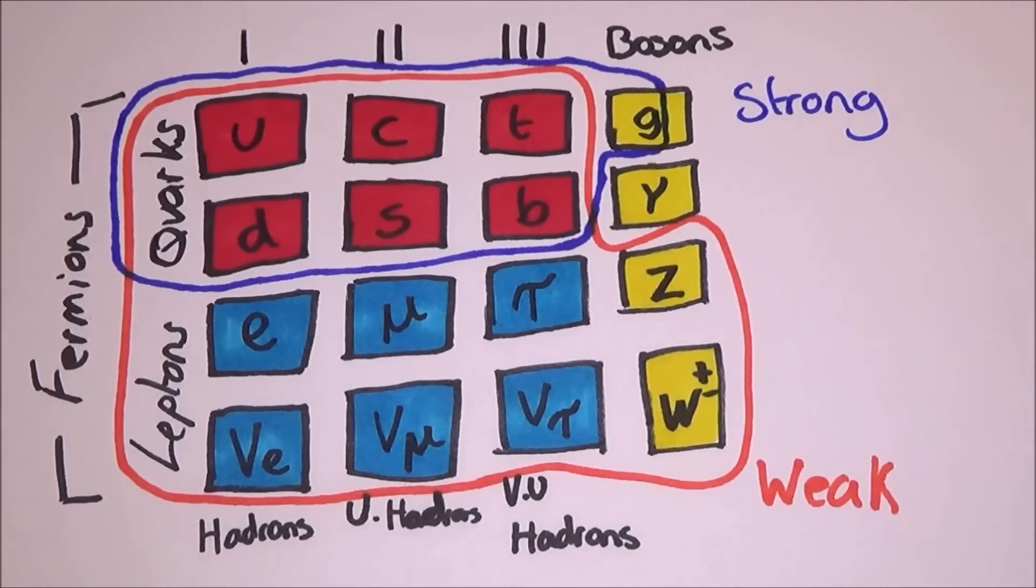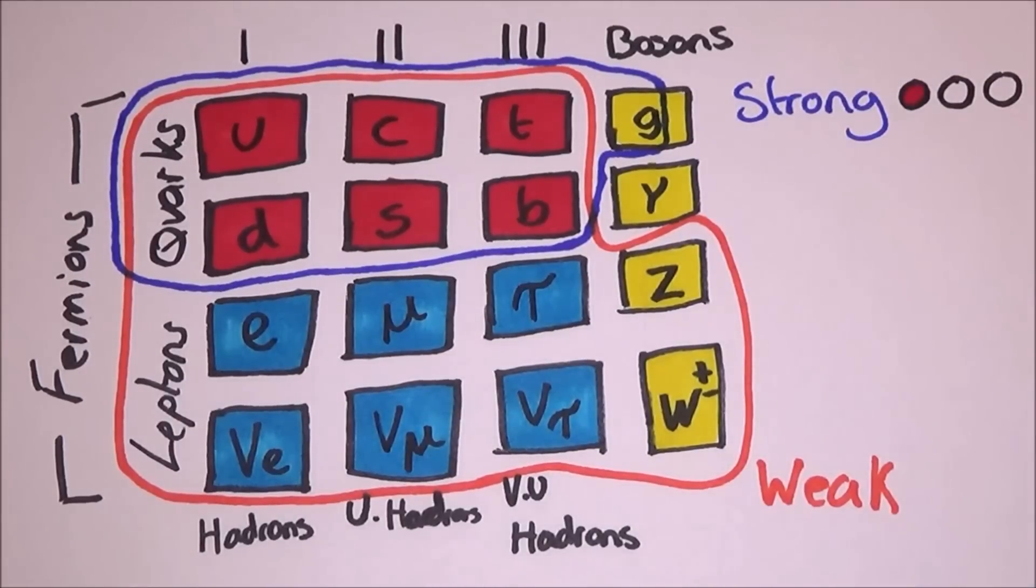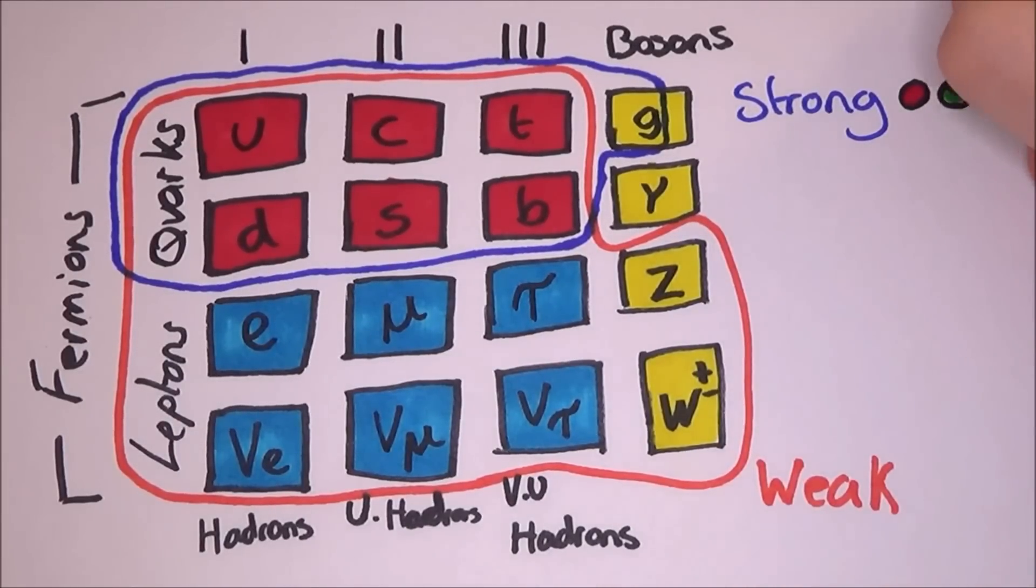Gluons and quarks have colour. While quarks can only have one out of three colours, gluons can have up to six colours. The colours are red, green, blue, anti red, anti green and anti blue. So, there are eight gluons, six that have two colours, one that has four and one that has all six colours.